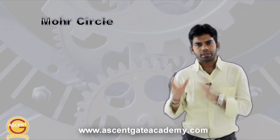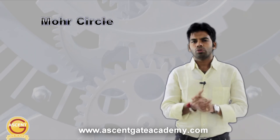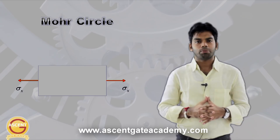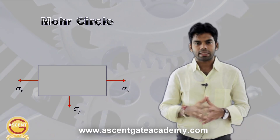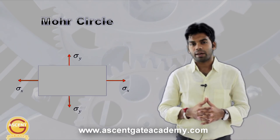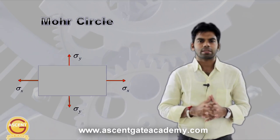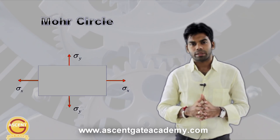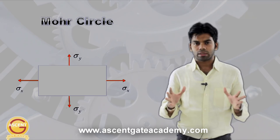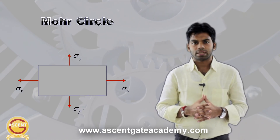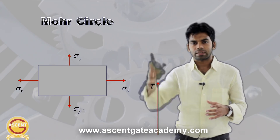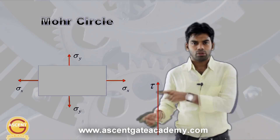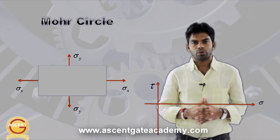That method is nothing but the Mohr circle. How do we draw a Mohr circle? Suppose we have a component subjected to two perpendicular stresses: sigma_x in the x direction and sigma_y in the y direction, without considering shear stress. The Mohr circle is actually a graph between normal stress and shear stress — shear stress on the y-axis and normal stress on the x-axis.